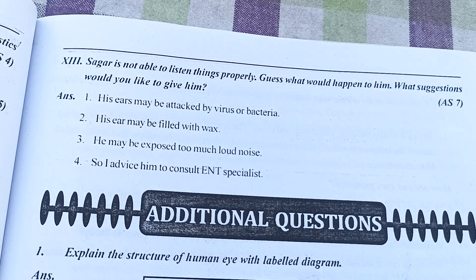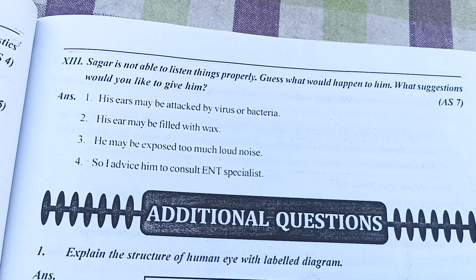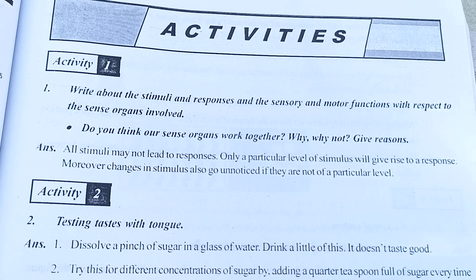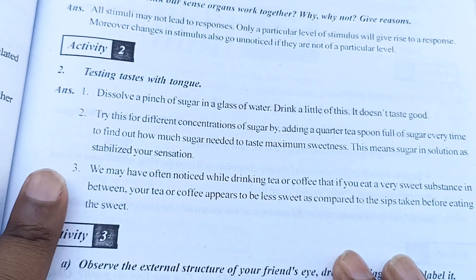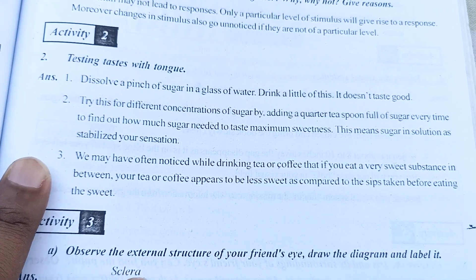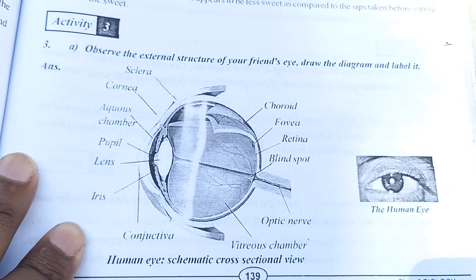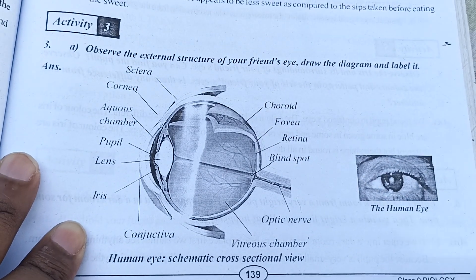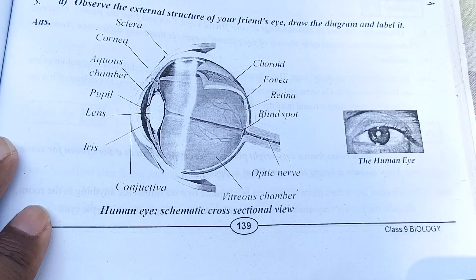Coming next, this is the 11th and 12th answer. After that, this is the 13th one. Our question-answer section for Chapter 6 is totally completed. If you want to watch the activities, continue with me; otherwise you can leave it here. If you want to write activities, just watch this video. Now let's move to the activities. This is Activity 1, and after that Activity 2. Please don't be confused — these are the activities, in case you want to write them.